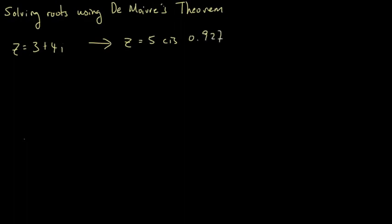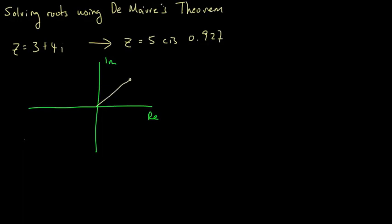Now if we draw this onto the Argand diagram — that's my real axis, that's my imaginary axis — and I draw a line here where this is 4, this is 3, this is where my complex number lies. And this is my theta.